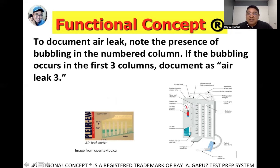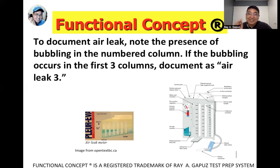To document an air leak using a Pleurivac, the drainage collection chamber is the main white area. The teal or blue-green area is the air leak monitor, which contains several small chambers — for example chambers one through six. If bubbling is noticed in chambers one, two, and three, you document it as 'air leak 3,' meaning three chambers are bubbling. The red area is the suction control area. The three zones are: collection chamber, air leak monitor chamber, and suction control chamber.